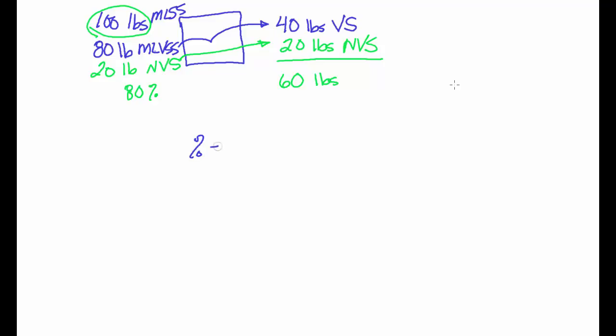If you look at the calculation for a percent, a percent is the part that we're interested in divided by the whole thing times 100. So if we put the volatiles only on the top, that's 40 pounds coming out. But then the whole thing coming out is 60 pounds. And so you end up on the back end of the digester at 66.67 repeating, which is 67% volatile.